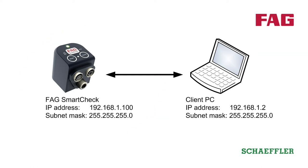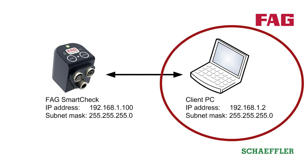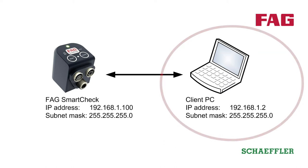So that the PC can communicate with the FAG SmartCheck, the IP addresses of the PC and FAG SmartCheck must be in the same range. Please observe the corresponding guidelines in the manual. In this case, we will enter the address 192.168.1.2 for the PC.